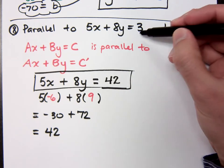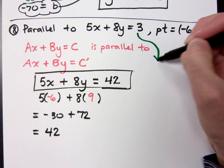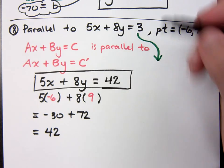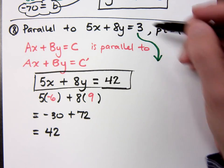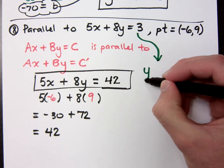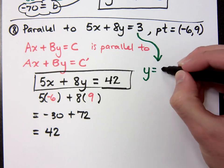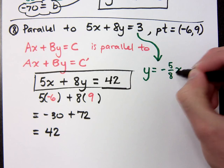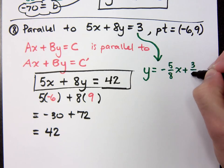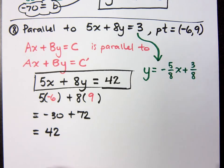Now if you took this guy, suppose you forgot this neat little trick here. Can you find the slope from this guy? You would solve for y, right? And when you solve for y, you would have negative 5 eighths x plus 3 eighths. Okay?